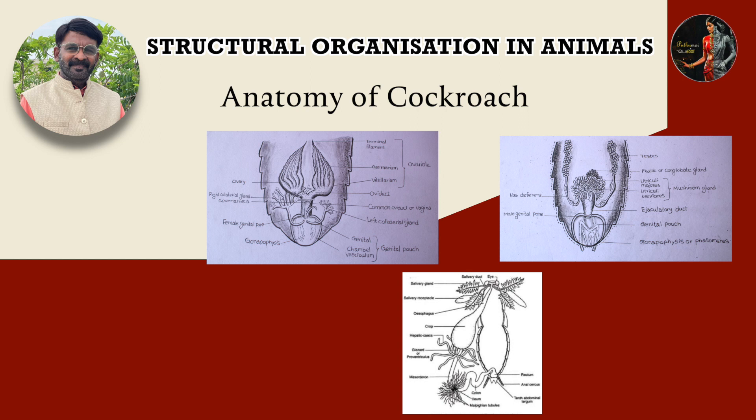Excretory system: the cockroach is uricotelic and excretes uric acid. The main excretory organ of the cockroach is Malpighian tubules (M-A-L-P-I-G-H-I-A-N). Malpighian tubules take part in both excretion and osmoregulation.